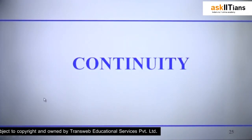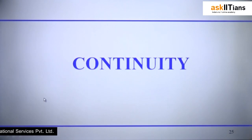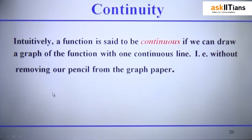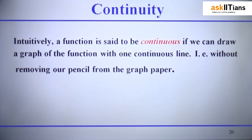After doing brainstorming over limits, finite limits, infinite limits, and how to find out limits, let's come to the topic of prime importance. A function is said to be continuous if we can draw its graph with one continuous line — in other words, if you pick up your pen and draw the graph without lifting it from the paper sheet, then that function in rough terms is called a continuous function.